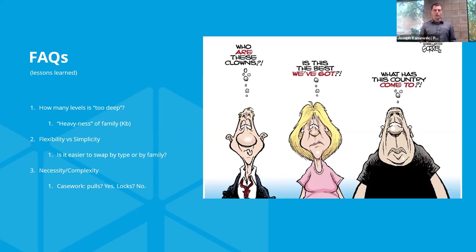If you don't need to show the pulls at all, don't show them — don't waste the kilobytes of data, especially when you're modeling a school with hundreds of lockers. The question of 'too deep': we got seven-plus levels on the locker family. The necessity was required to do the repeating array in both directions, which gave us two layers automatically. But it does get heavier — when swapping windows as Joe demonstrated, it took a second or two even in a small model.